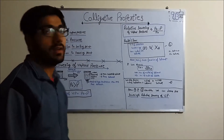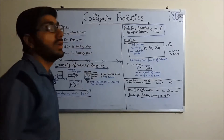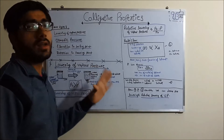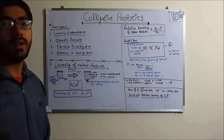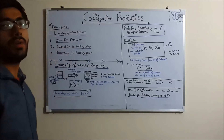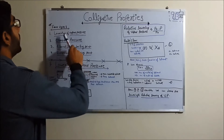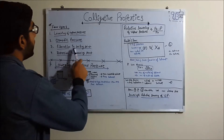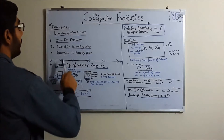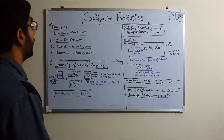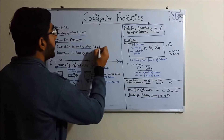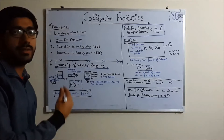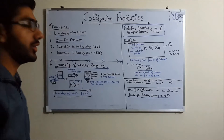Hello guys, today I will start a new topic which is colligative properties. It is very useful for vapor pressure, osmotic pressure, and more. There are four types of colligative properties: number one is the lowering of vapor pressure, the second is the osmotic pressure, the third is elevation in boiling point, and the last is depression in freezing point. Elevation in boiling point is delta T_b and depression in freezing point is delta T_f.